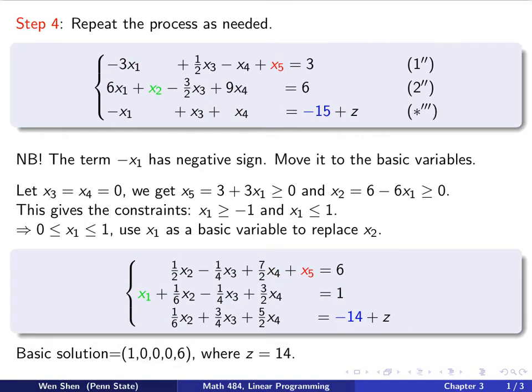And then remember, then you also have this 1 here, will be added on top of negative 15, and then you get negative 14. So you have a new canonical form of your linear programming problem.